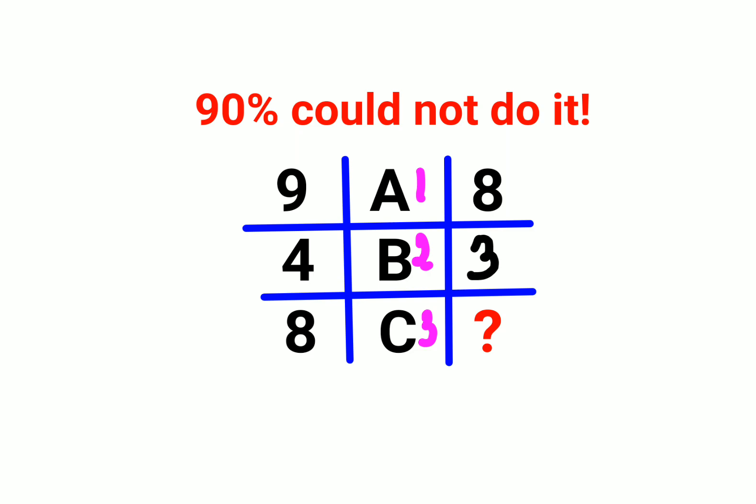When you subtract 9 minus 1 that should get you 8 and that is working over here. But 4 minus 2 should get you 2 but that is not the case over here. So in this case we need to do something else.